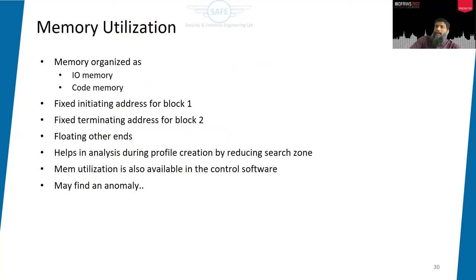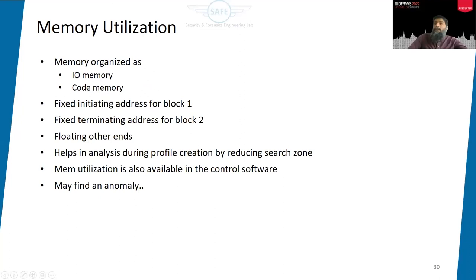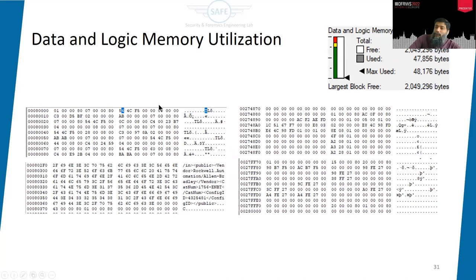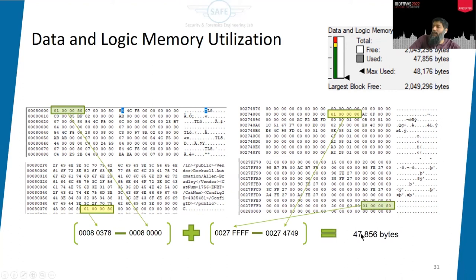Coming to memory utilization: there are two memories, and the data and logic memory has two blocks. Block one always starts at a fixed address — around address 0x00000800 — and floats at the end, so the ending address for block one is variable. For block two, the ending address is fixed but the starting address floats. These values exactly match what is available in the control software. So if the user expects something different from what the memory dump shows, we know there is a problem.